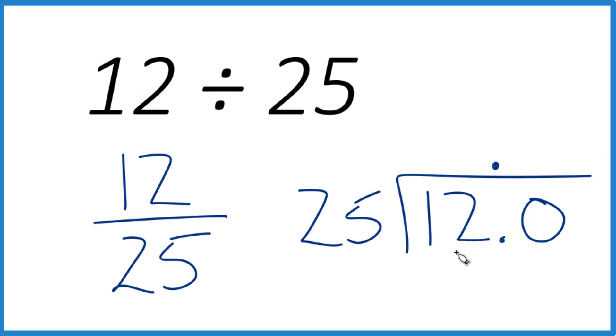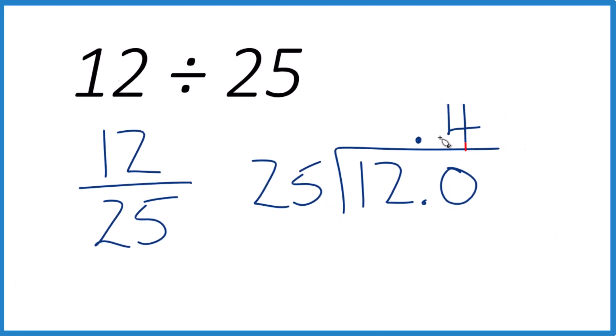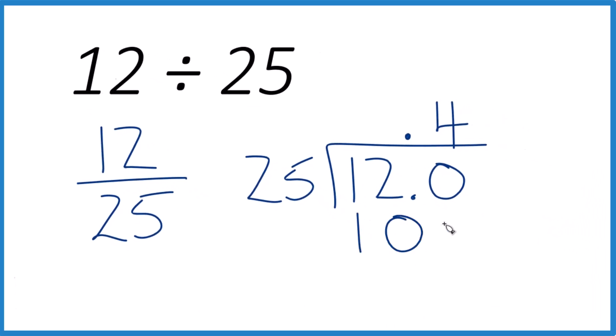So I could say 25 goes into 100 four times. Four times 25, that's 100. I could subtract, and that gives me 20.